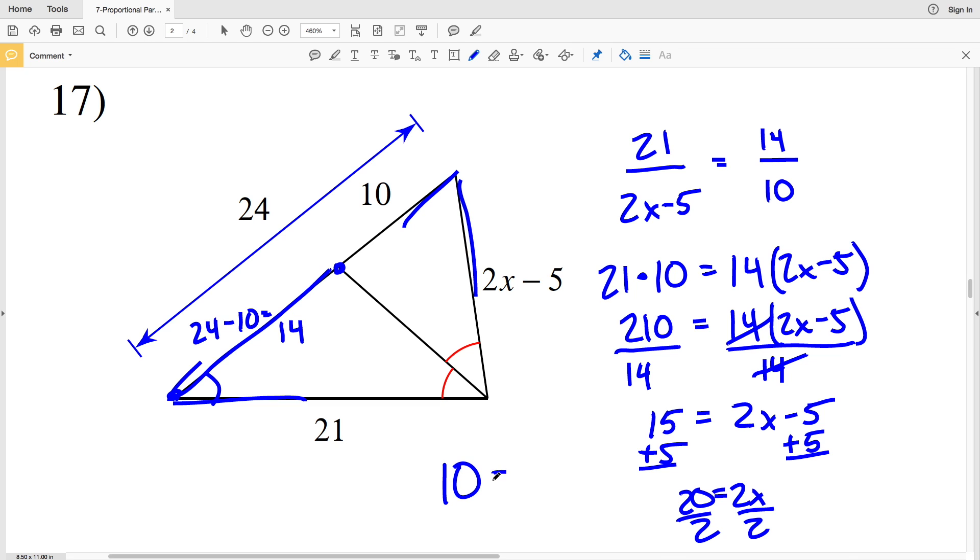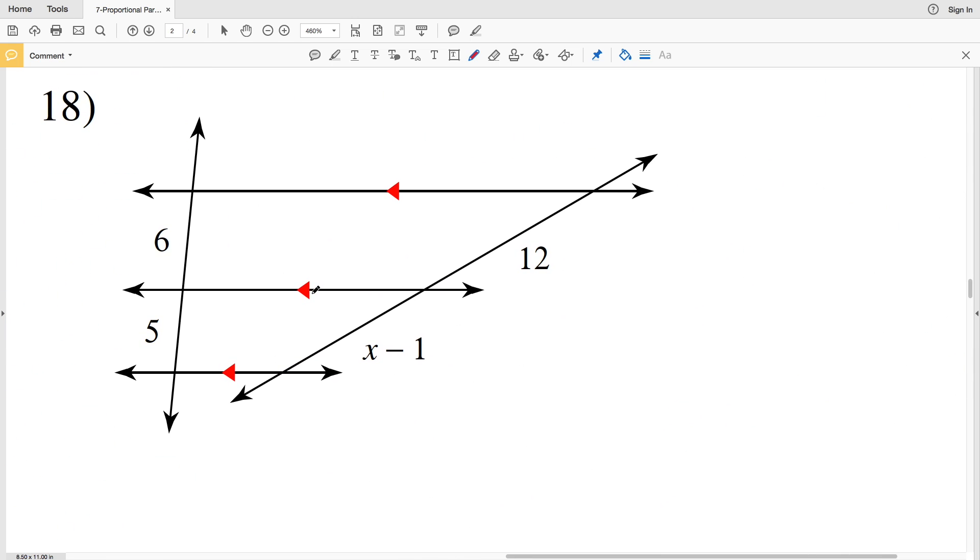And lastly on this worksheet, number 18. Before I go over the answer to this, subscribe, like, and share. Setting up my proportion: 6 over 5 is going to be proportional to 12 over x minus 1. So 6 times x minus 1 equals 12 times 5, and that's what I get when I cross multiply.